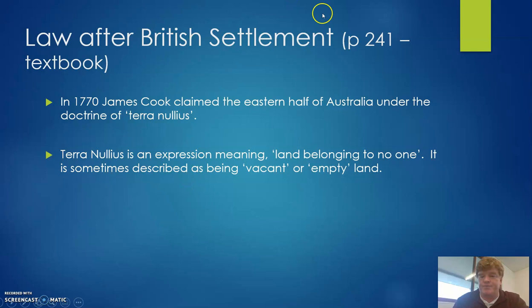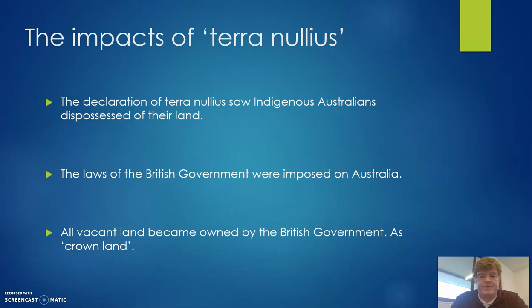When there was British settlement in Australia — and the page references I've put in here are from the textbook if you want to look at those — the land was declared as terra nullius, the idea that it was land belonging to no one, vacant and empty land. That had some fairly important legal significance. First, it meant there was no recognition of Indigenous Australians' rights to any land; the land was seen as vacant even though many Indigenous Australians were living there at the time. It also meant that the laws of the British government were imposed on this colony, so there was no room for traditional customary law.